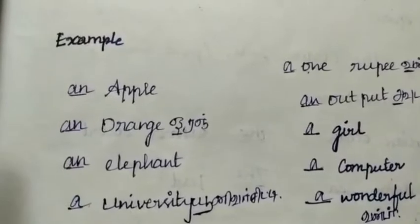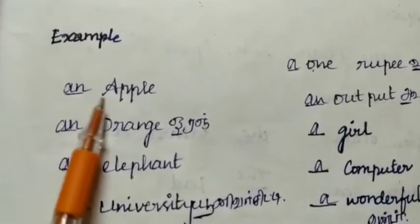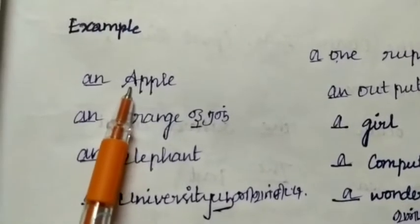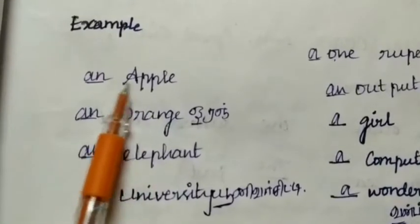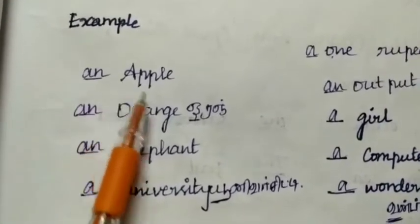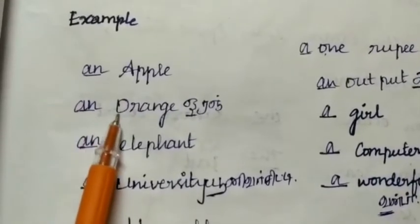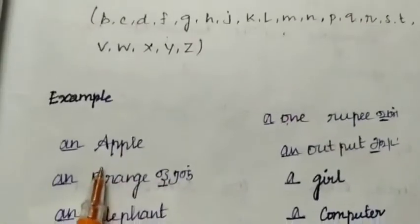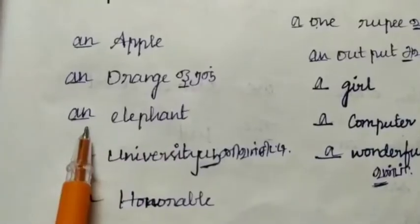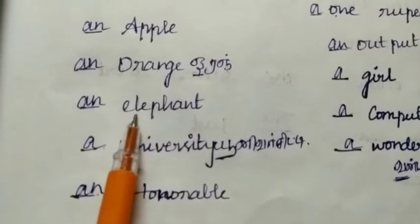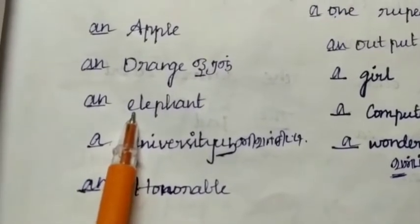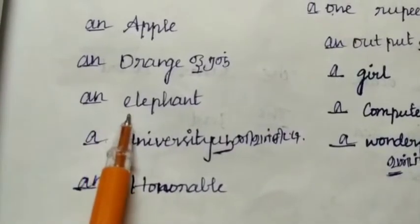For example: 'an apple' — here the sound is a vowel 'a', so we use 'an'. Next: 'an orange' — 'o' is a vowel letter. And 'an elephant' — 'e' is also a vowel letter, so we use 'an'.